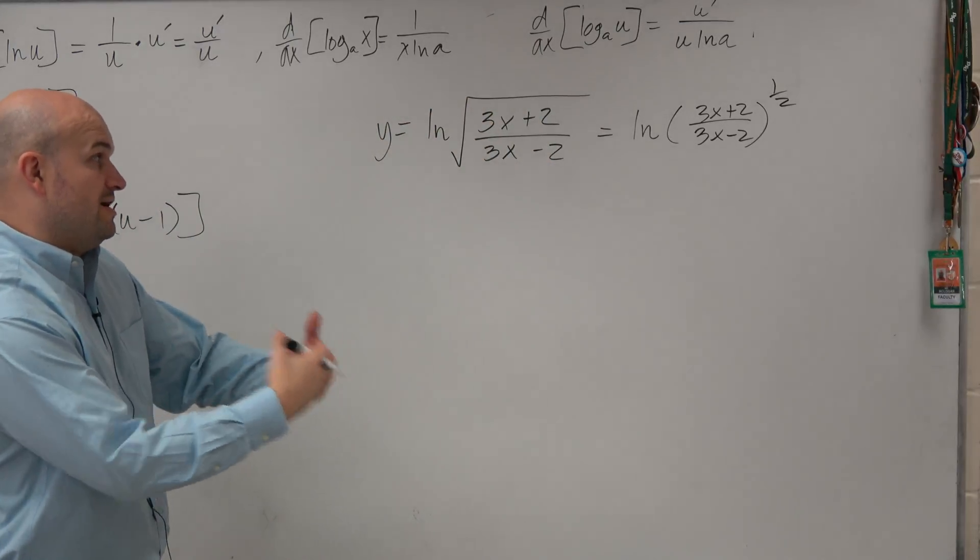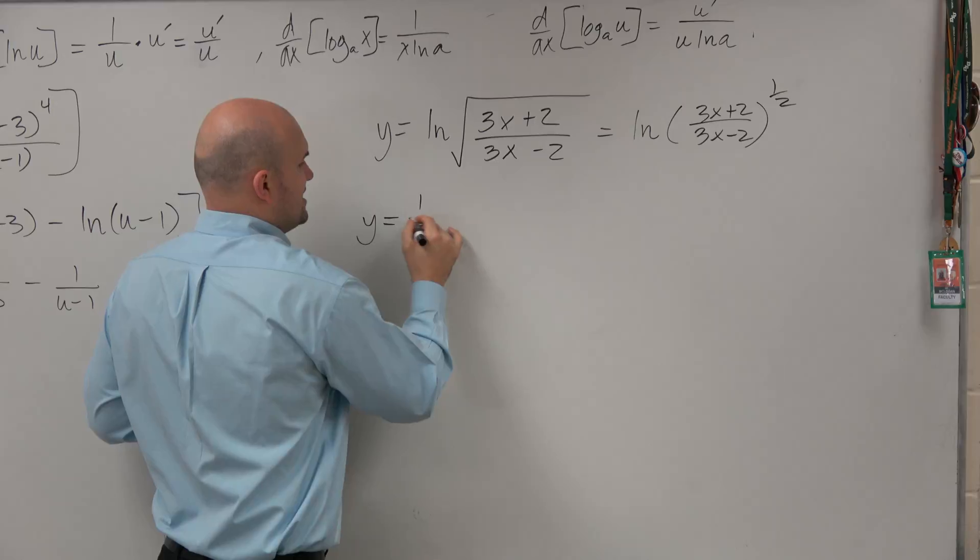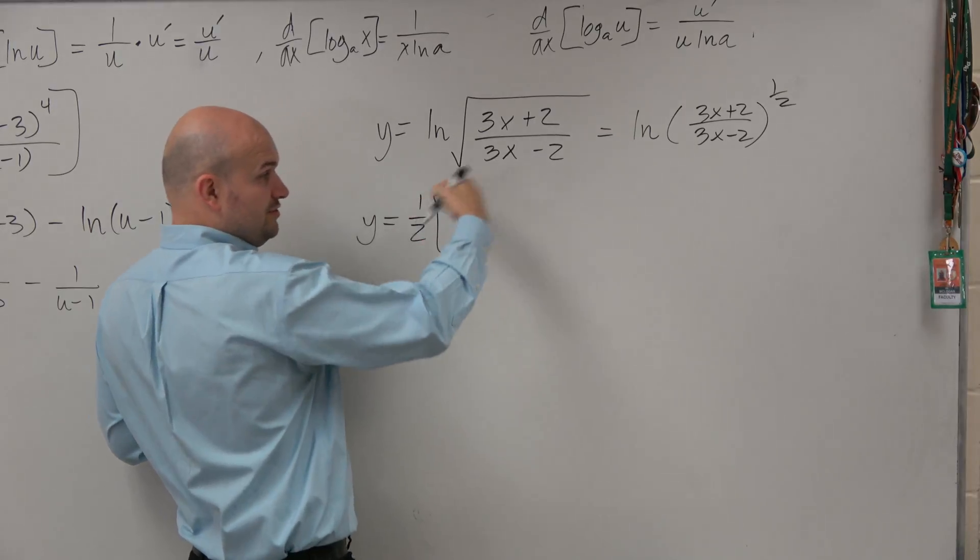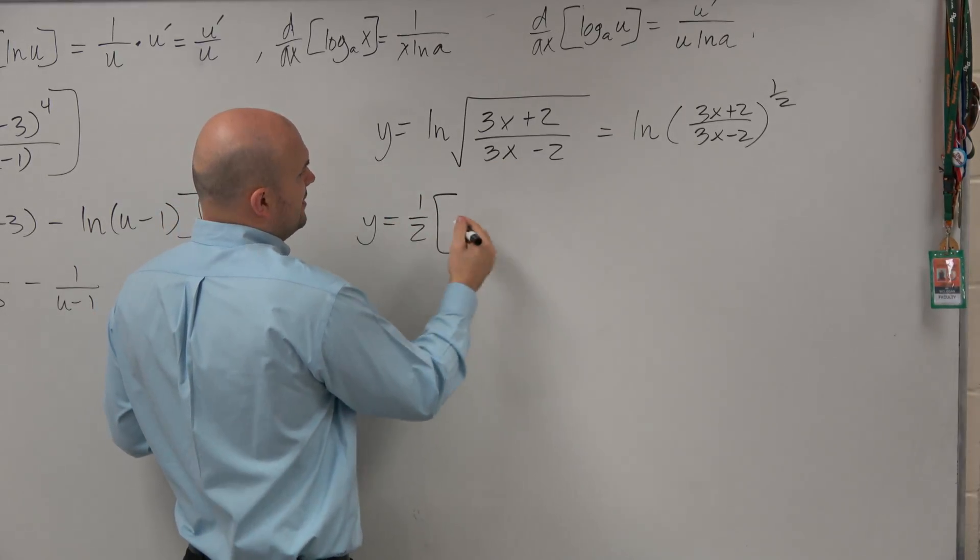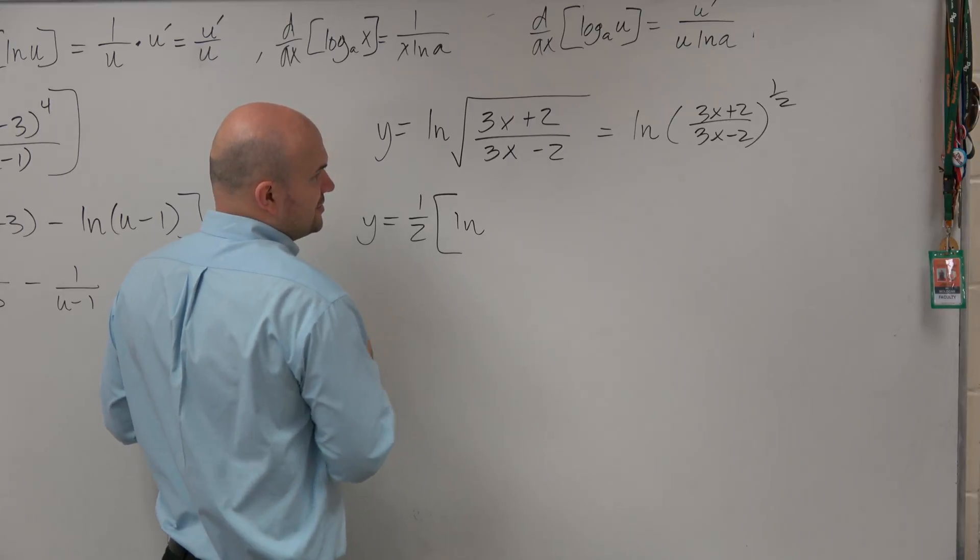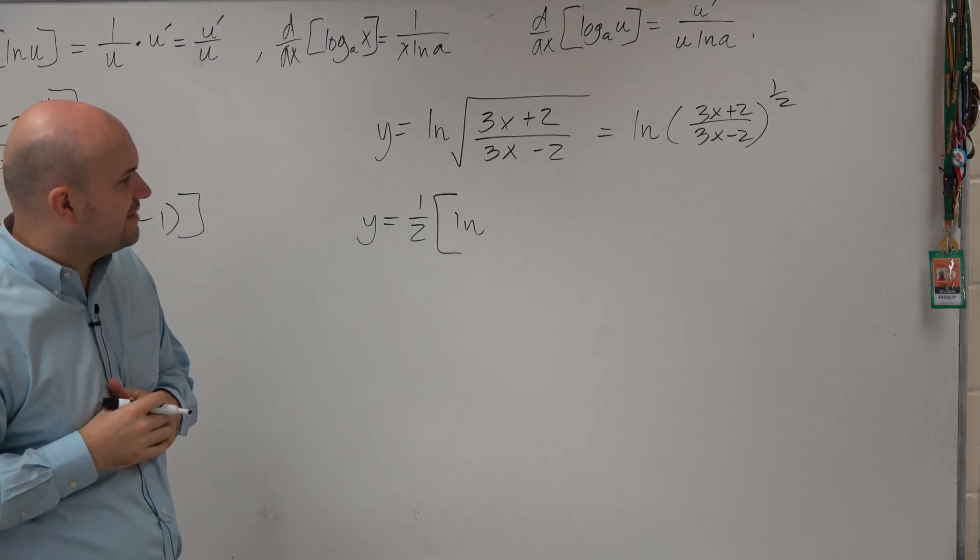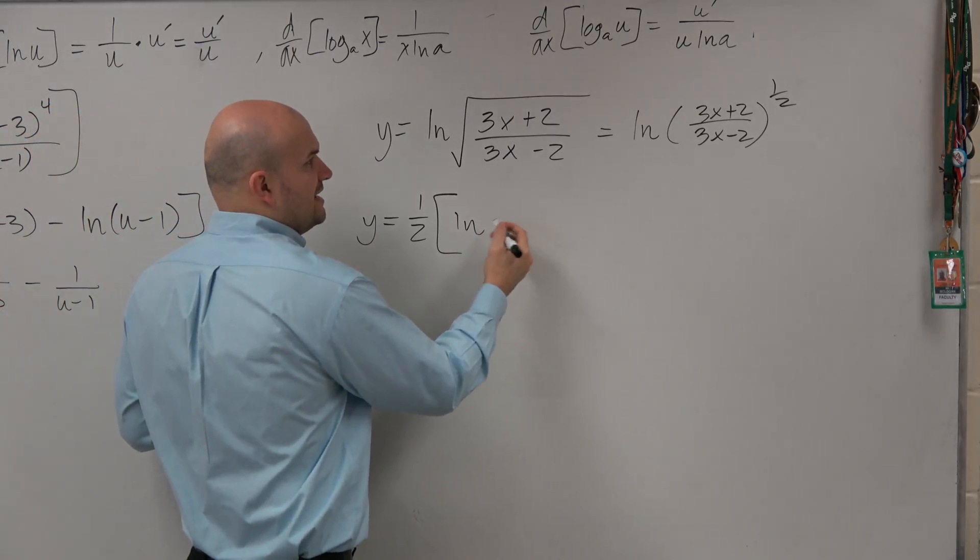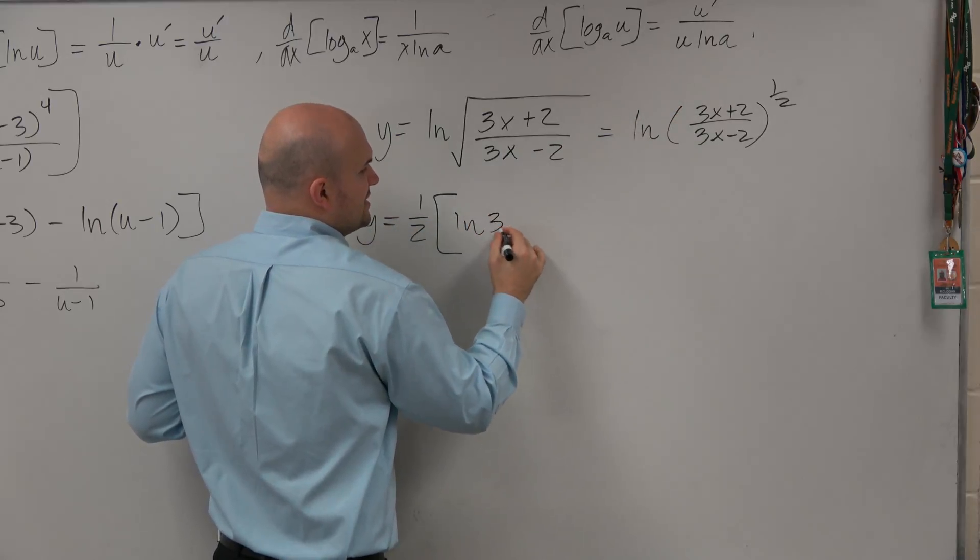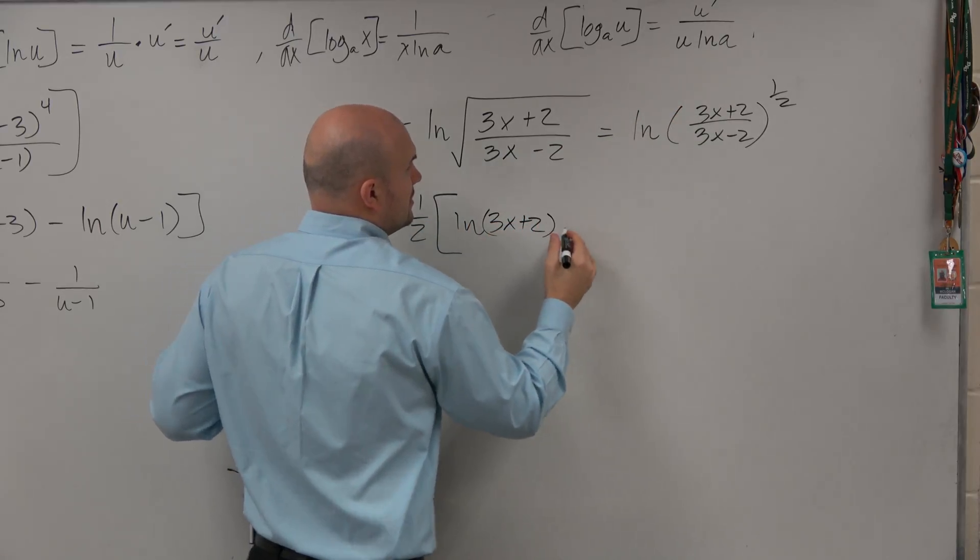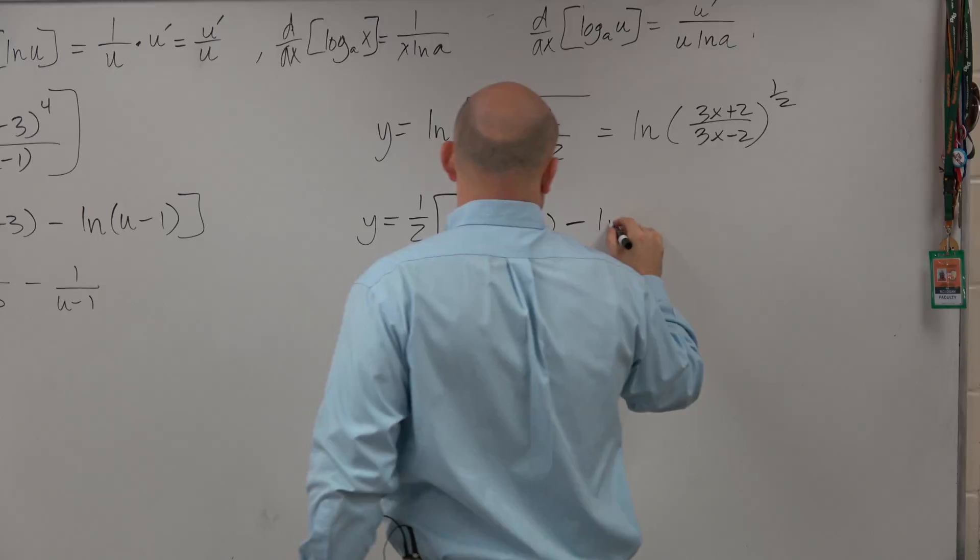If I want to apply the rules of logarithms, I can rewrite this as one-half using my bracket. You can distribute that through if you'd like, but I think it would be easier to bring that in front. Then I can basically do the quotient rule: this is 3x plus 2 minus ln of 3x minus 2.